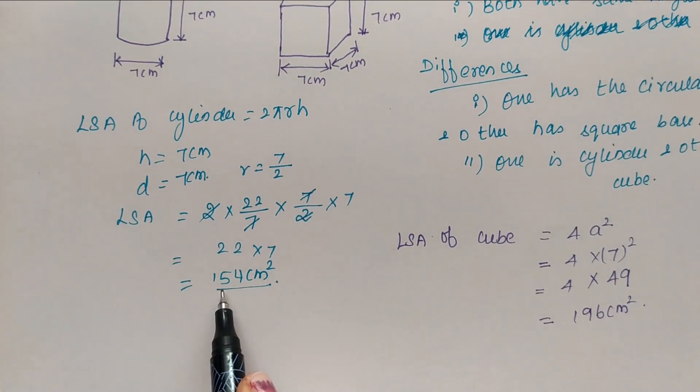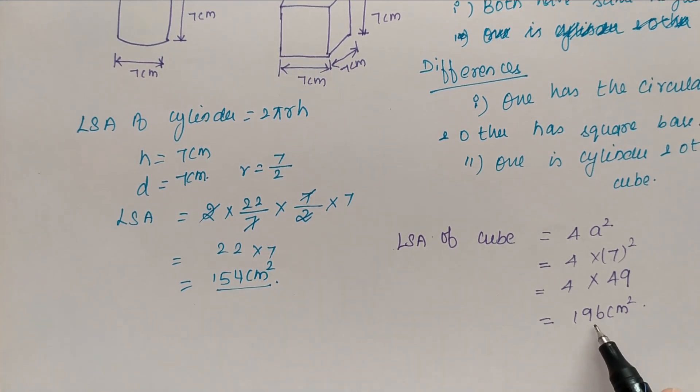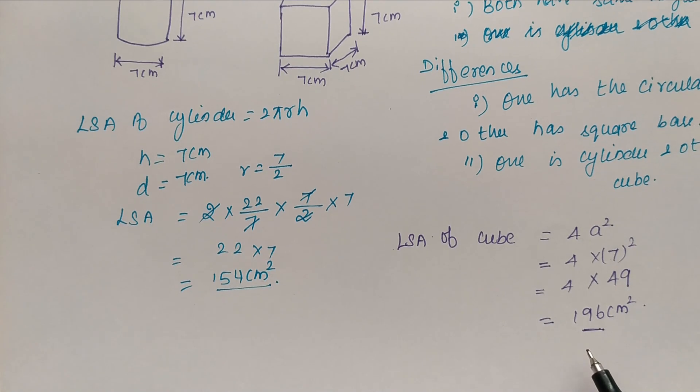So lateral surface area of cylinder is 154. For cube it is 196 cm square. So cube requires larger lateral surface. Cube has the larger lateral surface area.